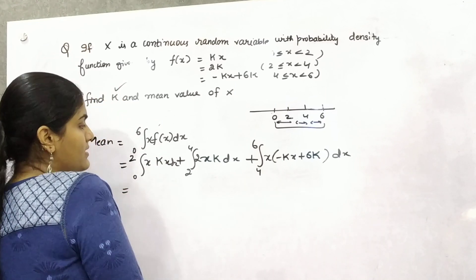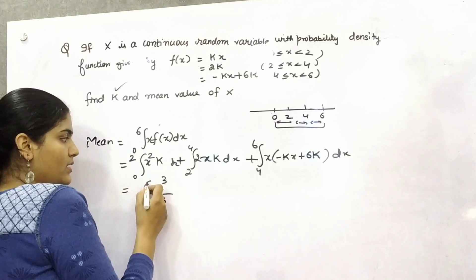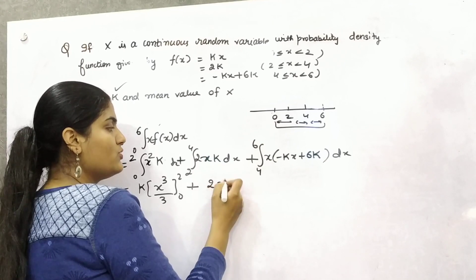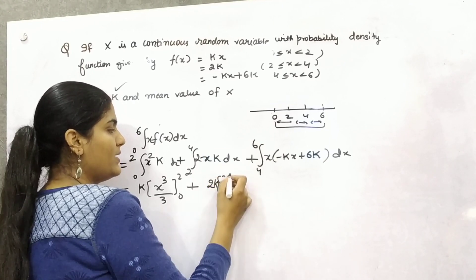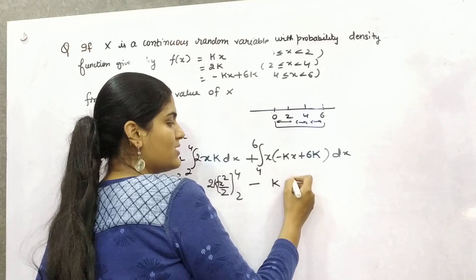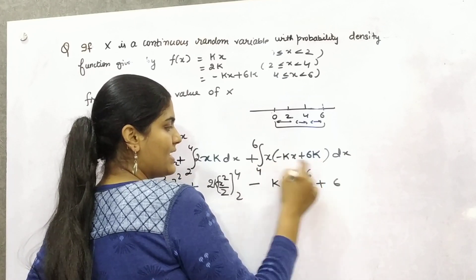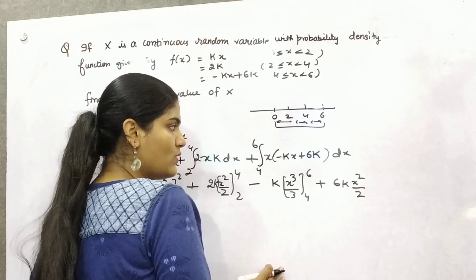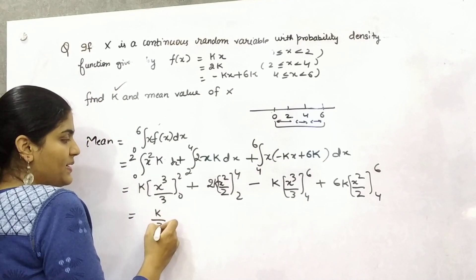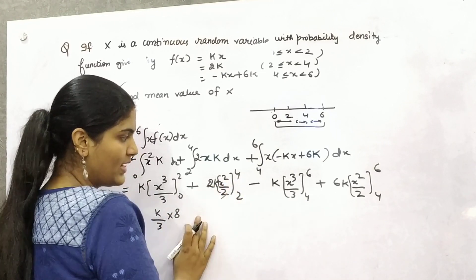Now this is x squared. So you know how to evaluate integration of x squared, x cubed by 3, limit 0 to 2, k is still here. 2x squared by 2, k is still here, limit 2 to 4. And this will be minus k, x cubed by 3 plus 6k x squared by 2, limit 4 to 6.